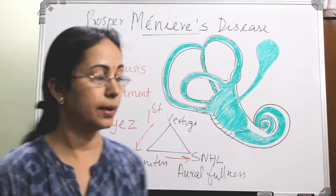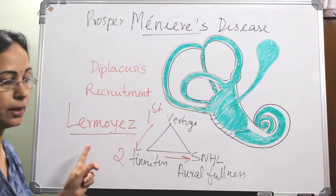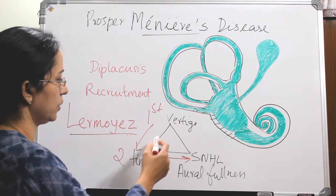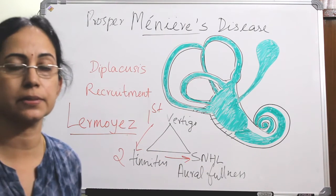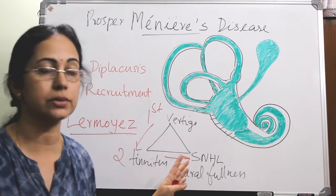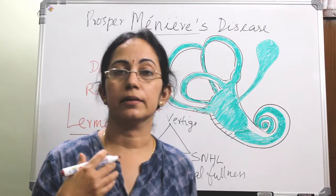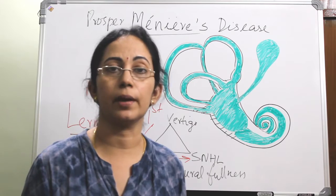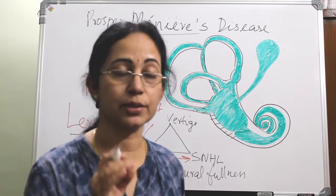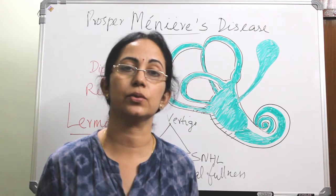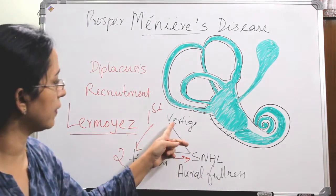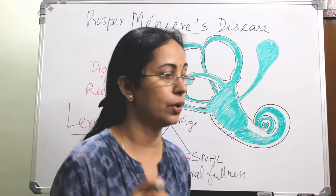One important term often asked about is Lermoyez syndrome. In usual Meniere's disease, the first symptom is vertigo, then tinnitus, and later sensorineural hearing loss. In Lermoyez syndrome — which is a variant of Meniere's disease — everything is reversed: first there is sensorineural hearing loss associated with tinnitus, and later vertigo develops. When the vertigo occurs, the sensorineural hearing loss actually improves. That is Lermoyez syndrome or the Lermoyez attack.